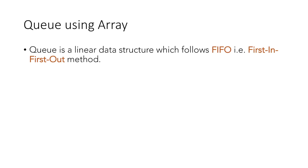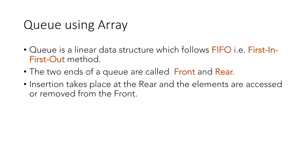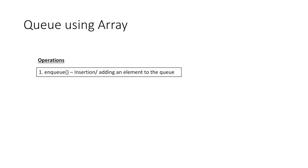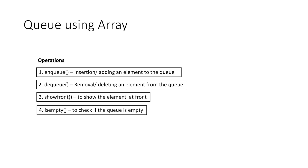Hello everyone. In this video we will implement queue using array. As we already know, queue is a linear data structure which follows FIFO, that is first in first out. The two ends of the queue are called front and rear, where insertion always takes place at the rear and elements are accessed or removed from the front. The basic operations are enqueue, which is adding an element to the queue, dequeue, which is deleting an element, show front to display the element at front, and isEmpty to check whether the queue is empty or not.